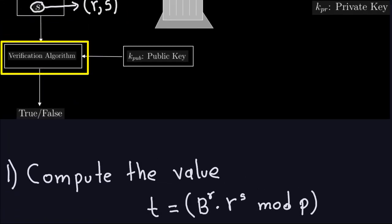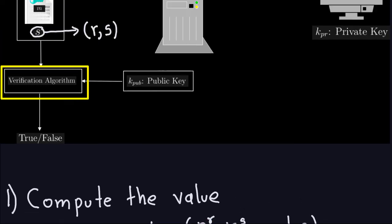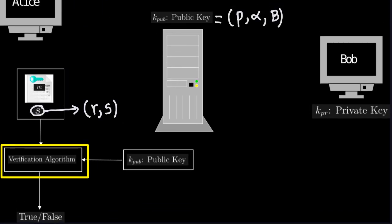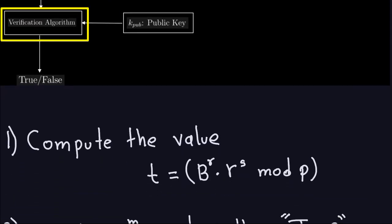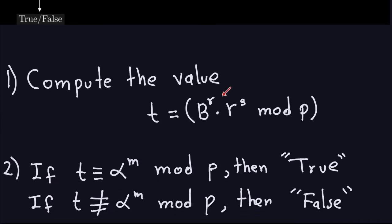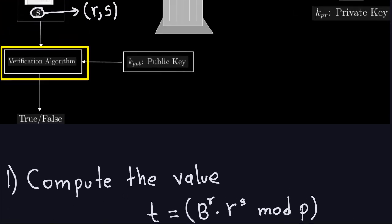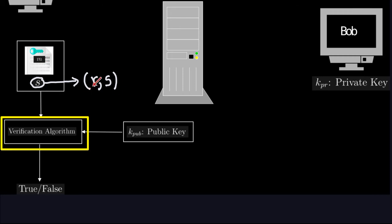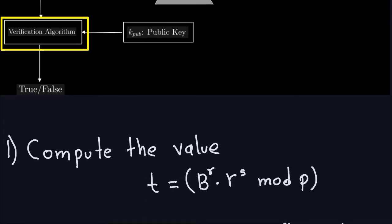That B for the computation is exactly the same B that is in the public key. And R and S are part of the signature. Then what you do is you're going to compare this number that you got to alpha to the M. Alpha is part of the public key, a generator of Z_P star, and M here is the message. The message that was received together with the signature was sent to the insecure channel.